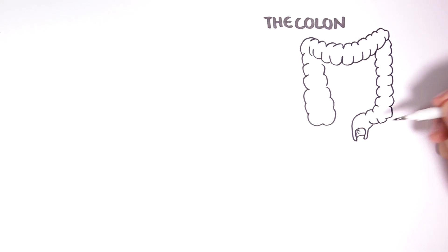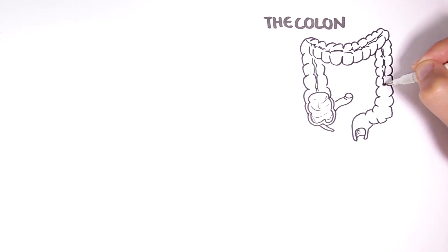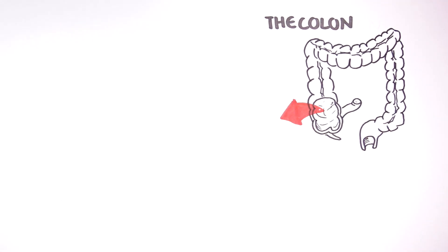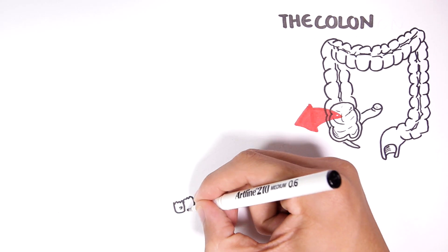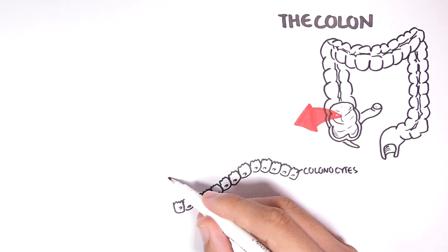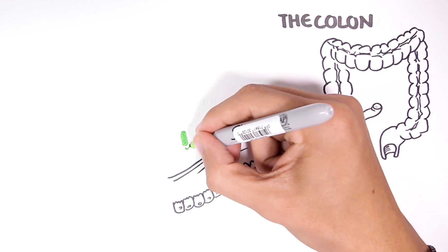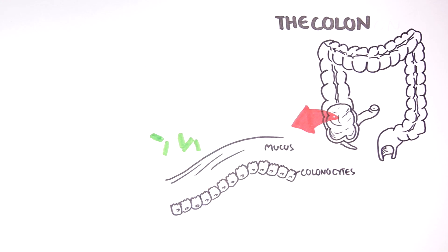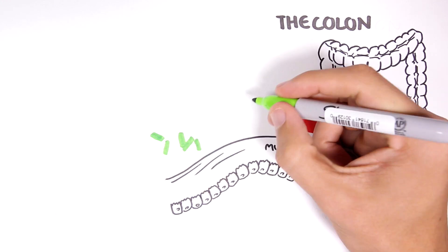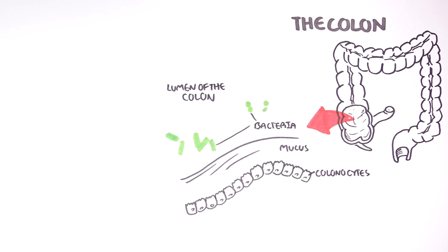The colon is colonized by trillions of bacteria. If we zoom into a section of the colon we can find the colon cells, and on top of the cells towards the lumen is mucus. Bacteria reside on the mucus and within the lumen. These bacteria have many functions in our body, one of which is fermenting foods that have escaped digestion in the small intestine.